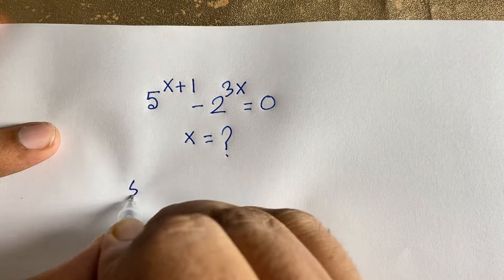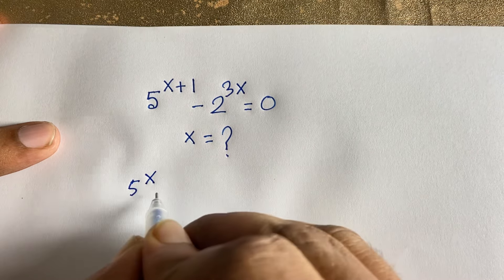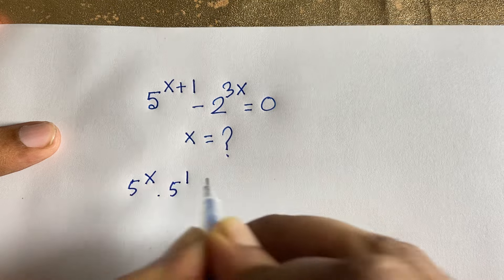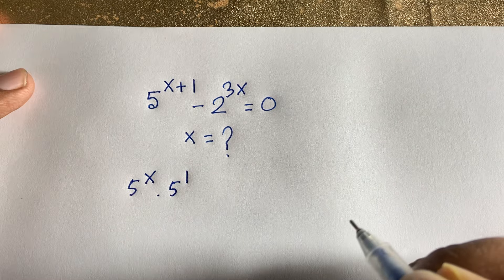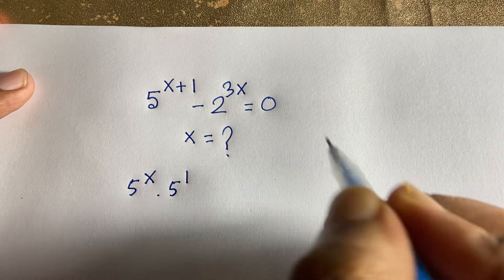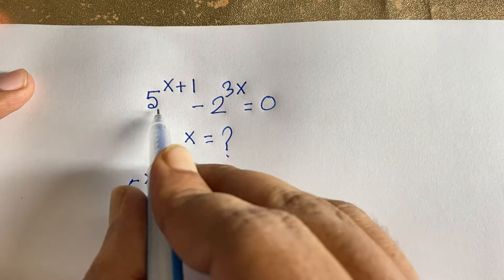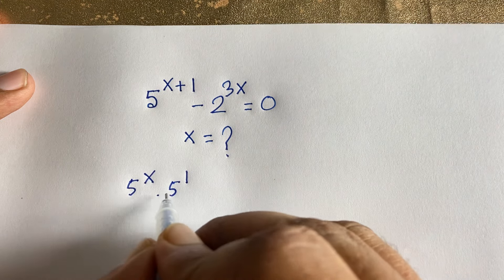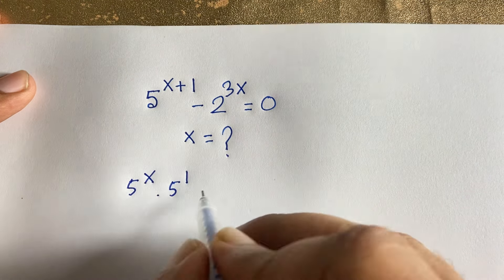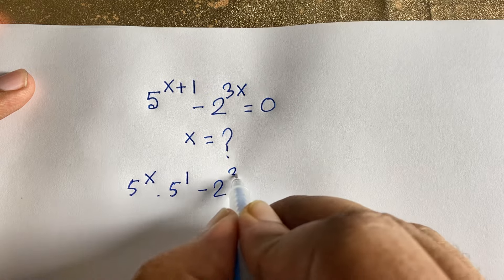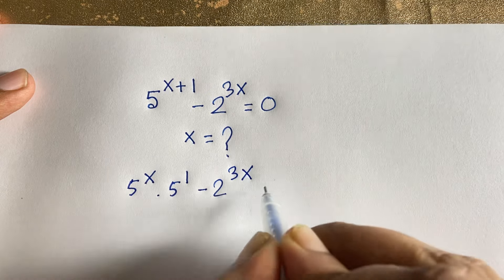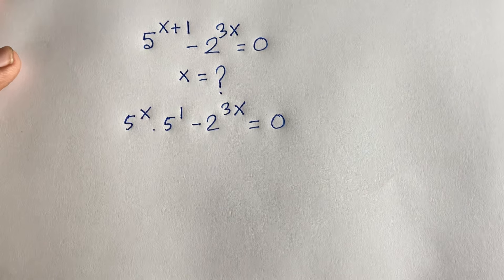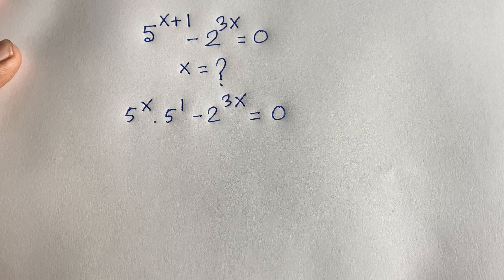In this case, I can say it will be 2 to the power x times 2 to the power 1, according to exponential rules: a to the power n+m equals a to the power n times a to the power m. So we have 2 to the power x times 2 to the power 1 minus 2 to the power 3x is equal to 0.